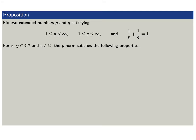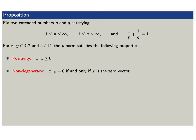Let's state a few properties of the p-norm. Let p be between 1 and infinity, and let q be the complementary exponent satisfying 1 over p plus 1 over q equals 1 — so if p equals 2, then q equals 2. First, positivity: the p-norm of any vector x is always greater than or equal to 0. Second, non-degeneracy: the p-norm of x is 0 if and only if x is the zero vector. Third, multiplicativity: for a vector x and scalar c, the p-norm of c times x equals the absolute value of c times the p-norm of x.